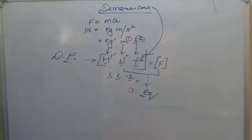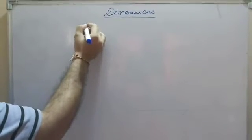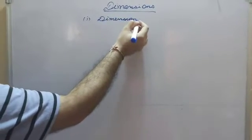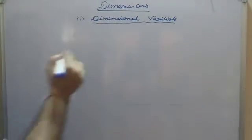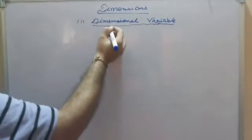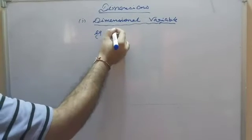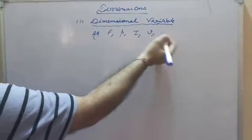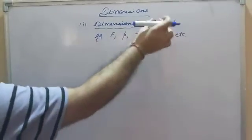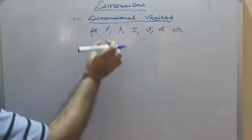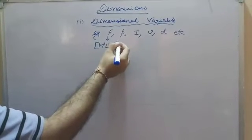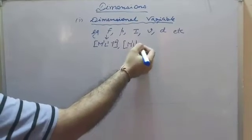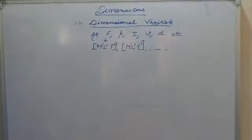Now let's look at types of dimensions. The first type is dimensional variable — any physical quantity whose value is variable but does have dimensions. For example: force, momentum, impulse, velocity, displacement. All have variable values but do have dimensions. Force has dimensions M¹L¹T⁻², and momentum (mass × velocity) has dimensions M¹L¹T⁻¹.